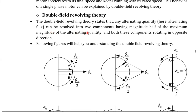In double field revolving theory, an alternating quantity can be resolved into two components, each having half of the maximum magnitude — that is φm by 2. One component is called the A vector and another is called the B vector. The A vector is rotating in one direction with magnitude φm by 2, and the B vector is also rotating with magnitude φm by 2.